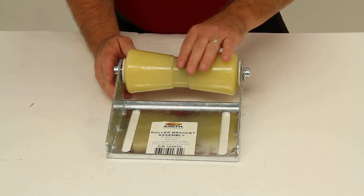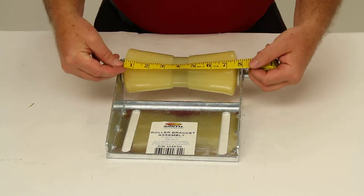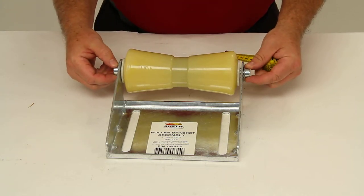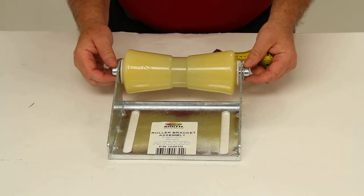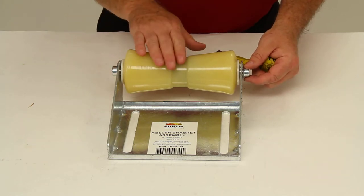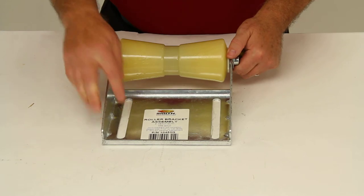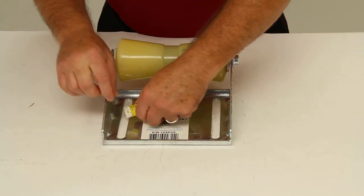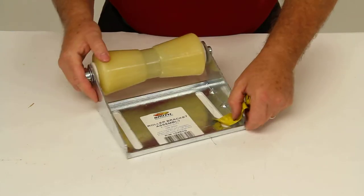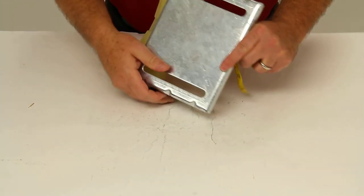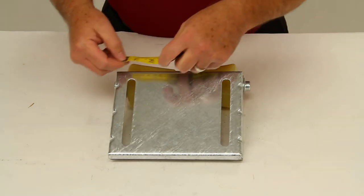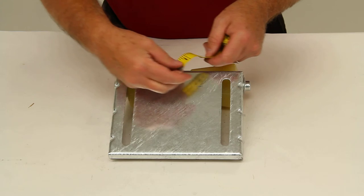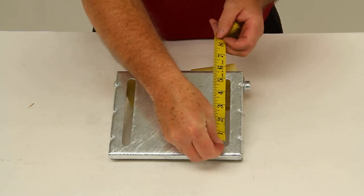I do want to give you a few dimensions on this. The overall roller length is going to be 8 inches. The shaft diameter that it rides on is 5/8 inch shaft diameter. The dimension of the mounting slots are half-inch wide and 5 inches long.